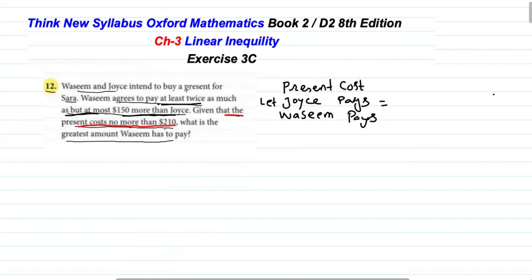The cost of the present is no more than 210 dollars. Joy's amount is not mentioned, so we let Joy's amount be x dollars. Wasim's amount will then be 210 minus x dollars, and this will be less than or equal to 210 minus x.